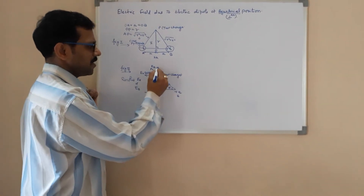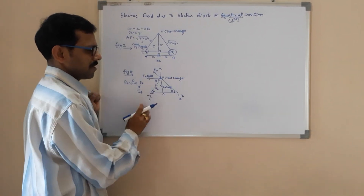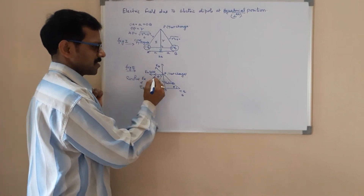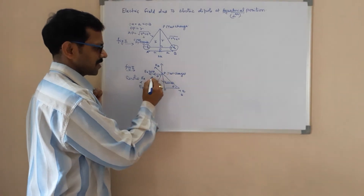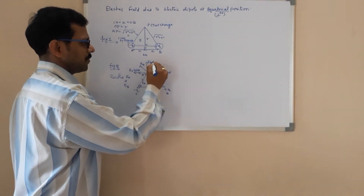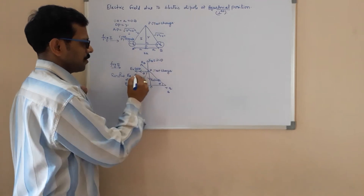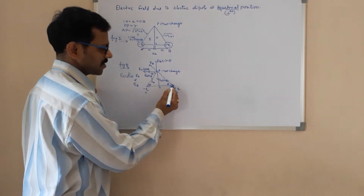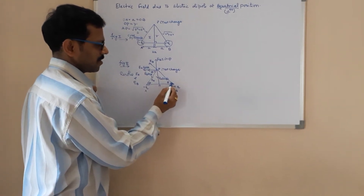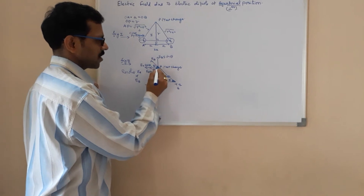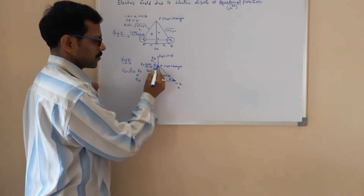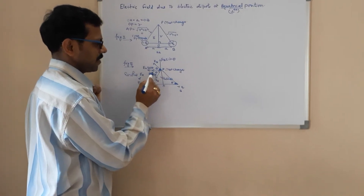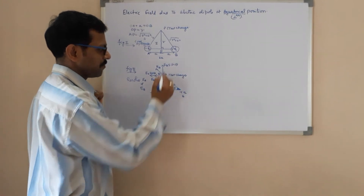Similarly, resolve Eb. One component will come along the y-axis and another component of Eb will come along the x-axis. This is the horizontal x-axis. This will be Eb sin theta and this will be Eb cos theta. This theta is corresponding to this angle, so due to this angle theta, Eb's component will be Eb cos theta and this will be Eb sin theta.